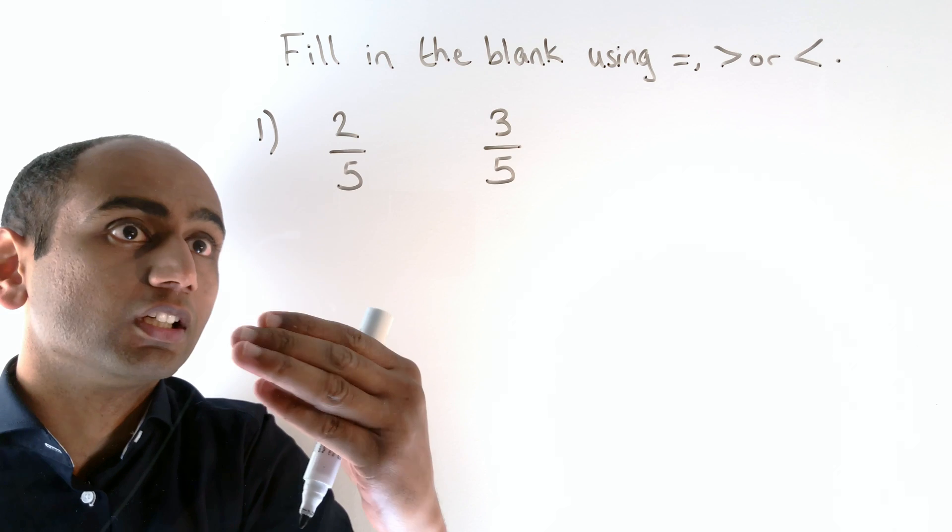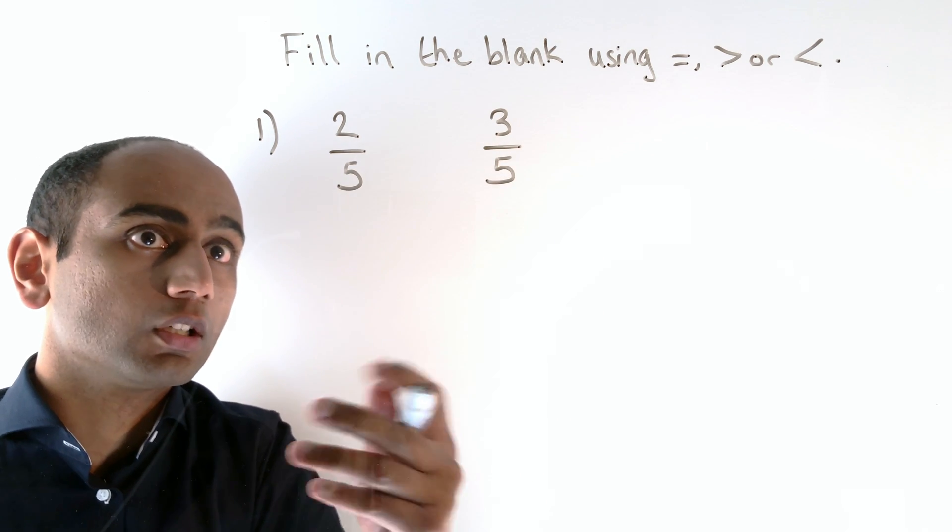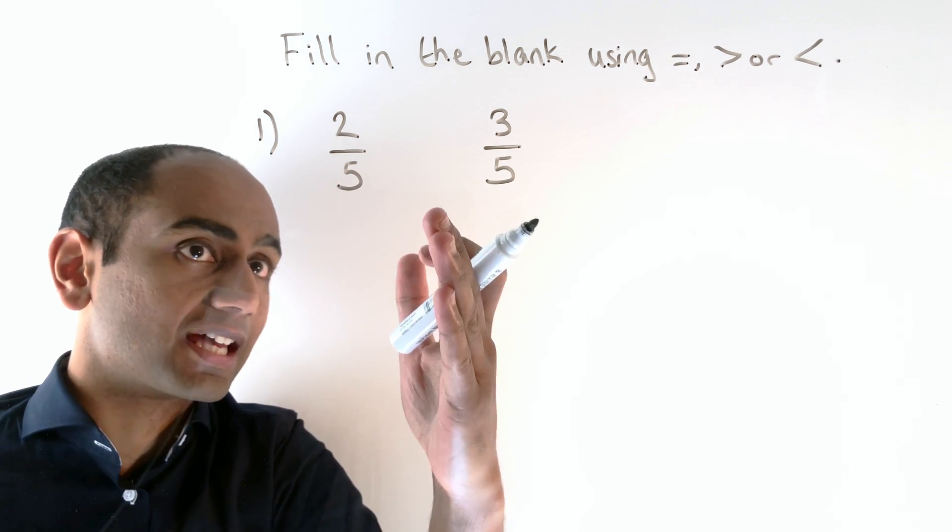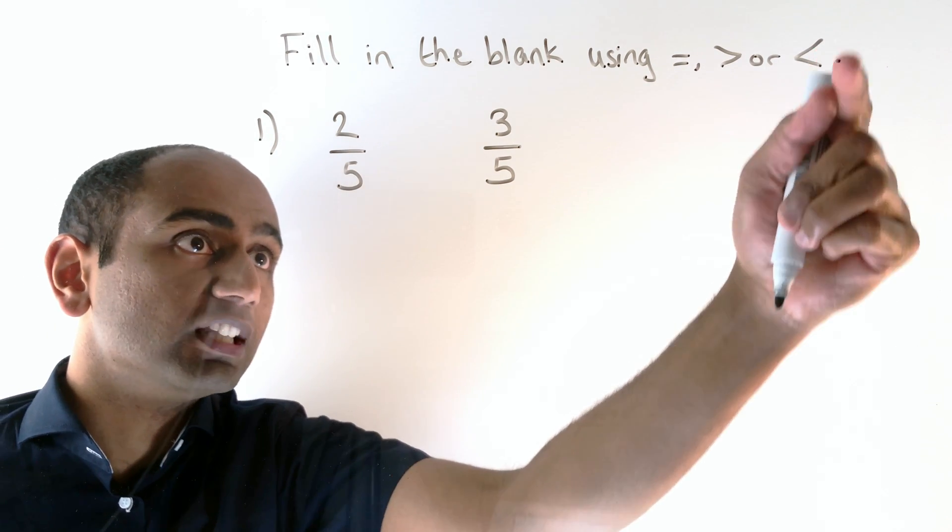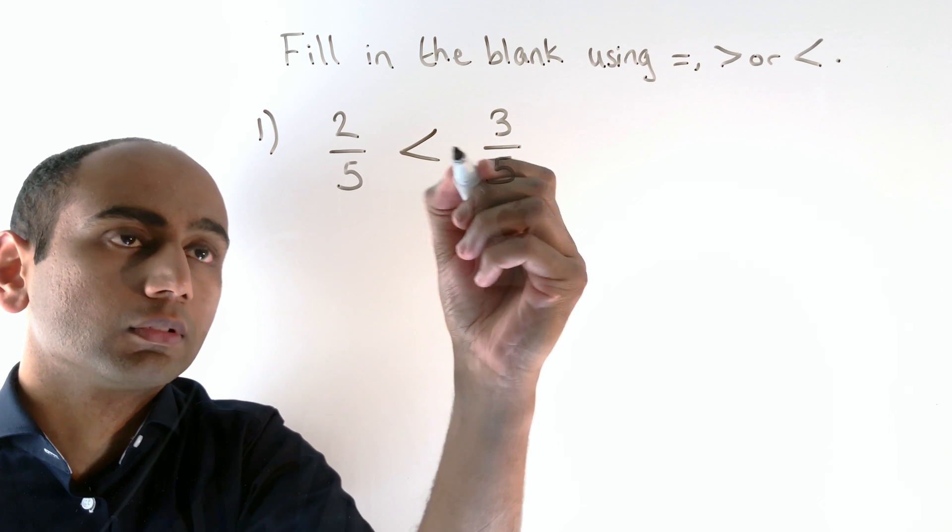Two-fifths is smaller than three-fifths, so in words we would say two-fifths is less than three-fifths, and therefore we would use the less than sign, like that.